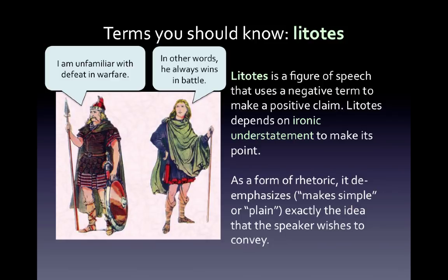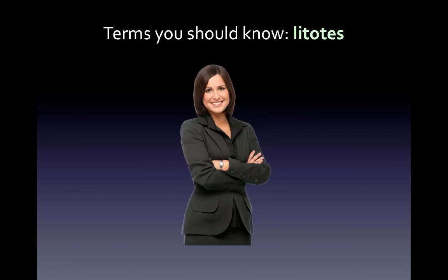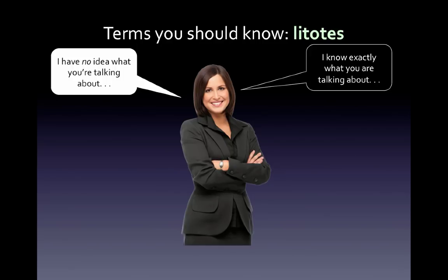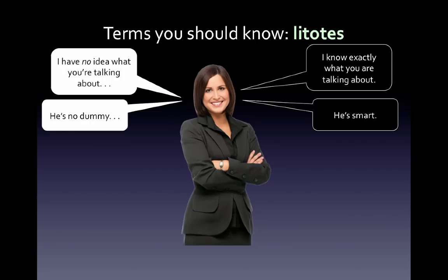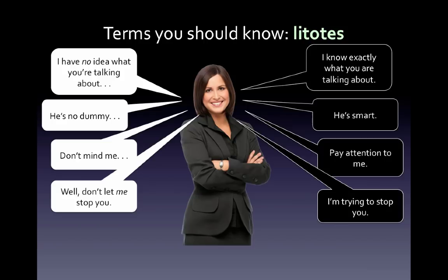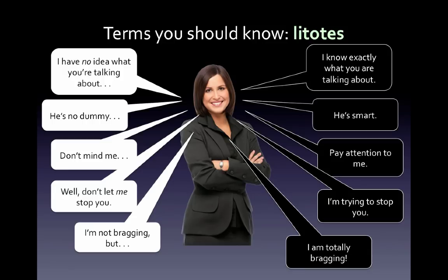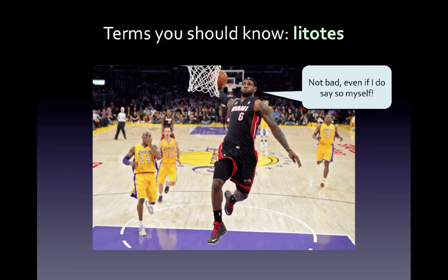Here are a few litotes that you might have heard in the course of your daily life — on the left, what the speaker says; on the right, what the speaker means. Note that in each example on the left, the speaker is using a negative term to make a positive claim. Litotes often depend on a certain tone to work, which makes them hard to spot when you are reading. In Beowulf, though, they are almost always used in the context of flighting or boasting, which makes them a bit easier to spot. Beowulf uses them to brag under the guise of false humility — what we might today recognize as a humble brag.